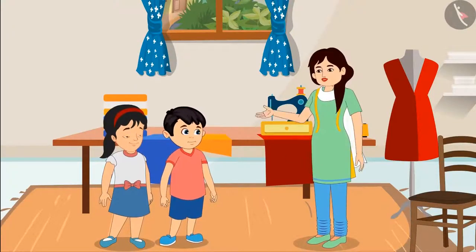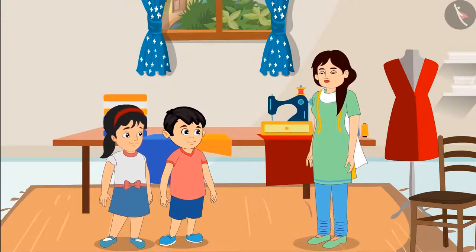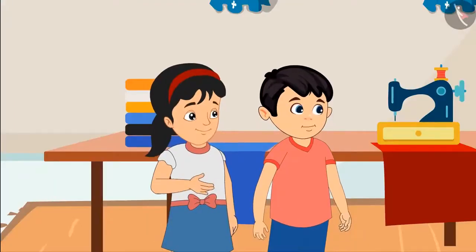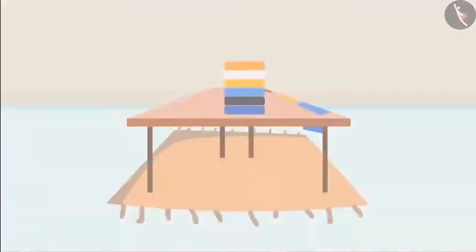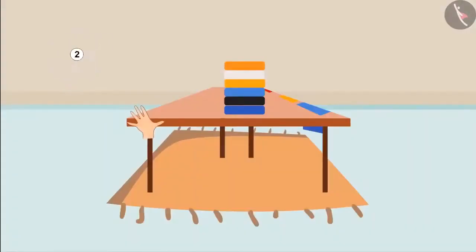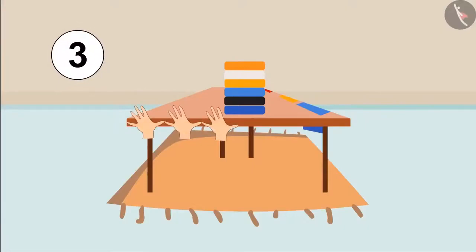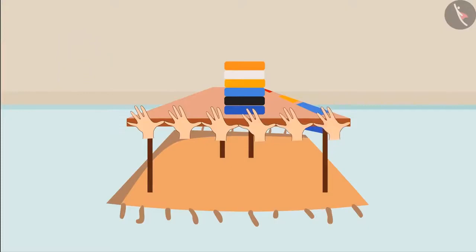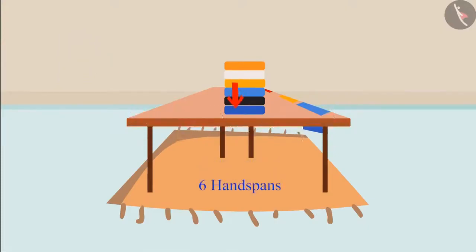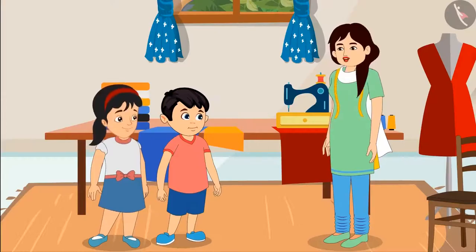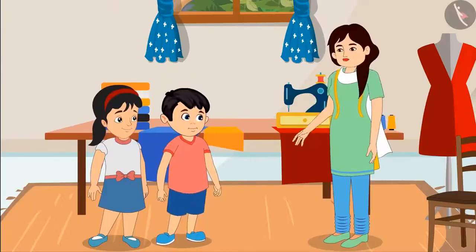Aunty asks Pinky to measure the length of the table. Pinky counts: one, two, three, four, five, six — the table is six hand spans long. Aunty confirms she is absolutely correct.